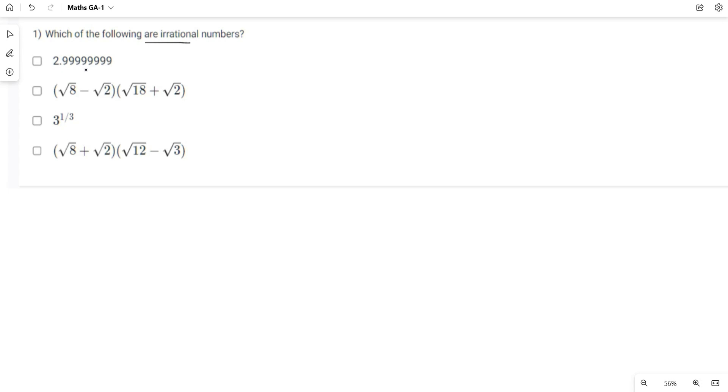The first option is 2.99999999 with eight nines. You can write this as 299999999 divided by 10 raised to 8, which is the same as the original number.